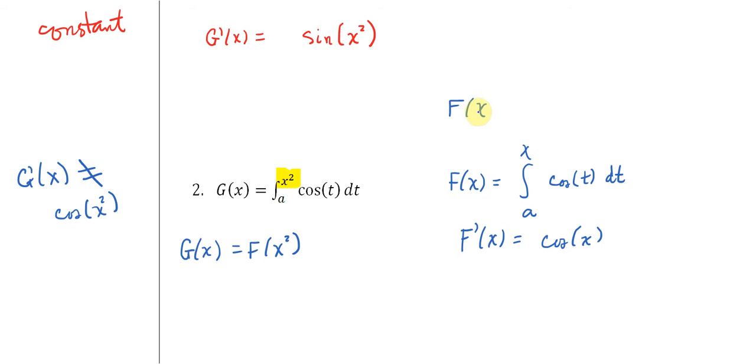So let me show you. So if we do f of x squared, then we have the definite integral from a to x squared of cosine of t dt. So this is precisely the same thing as g. So now we define g in terms of f.